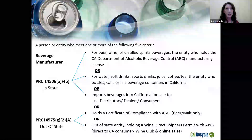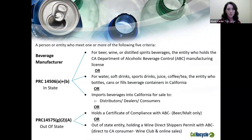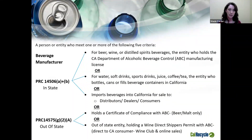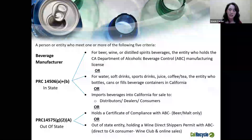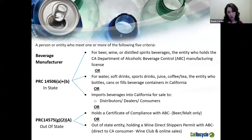There are also two ways for an entity headquartered outside of California to hold responsibility. If an entity holds a certificate of compliance with the Department of Alcoholic Beverage Control — specific for beer and malt, issued to entities shipping into California — they are the beverage manufacturer. And finally, the fifth point: an out-of-state entity holding a wine direct shippers permit (an '82' license) with California ABC. These are out-of-state wineries sending wine club or online sales direct to California consumers. If you hold an 82 license and are sending into California to a California consumer, you will be the beverage manufacturer responsible for processing fees.